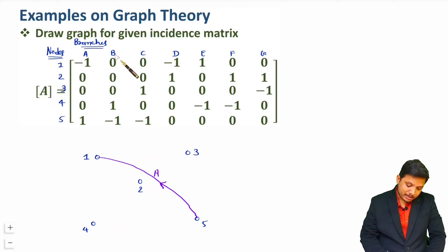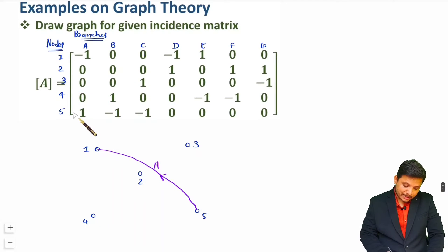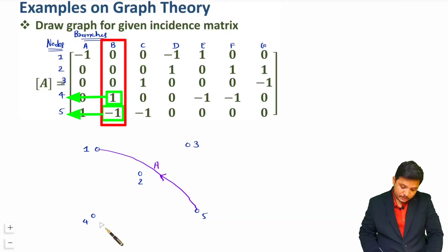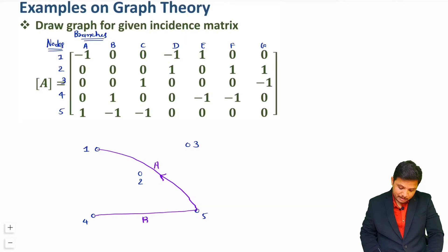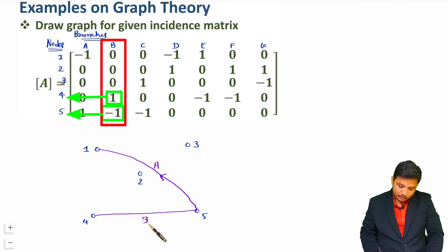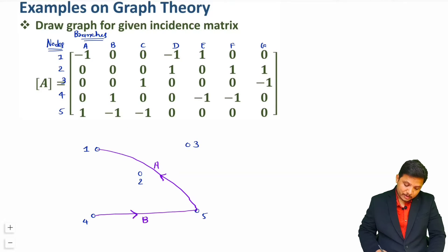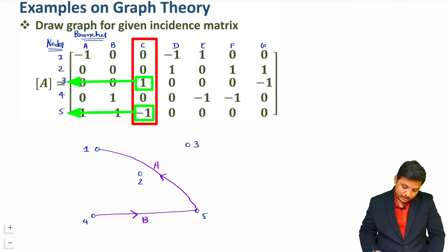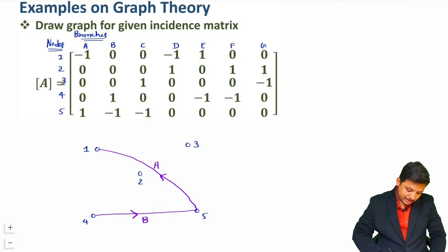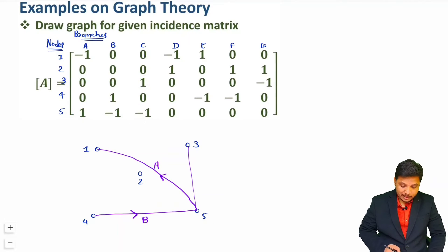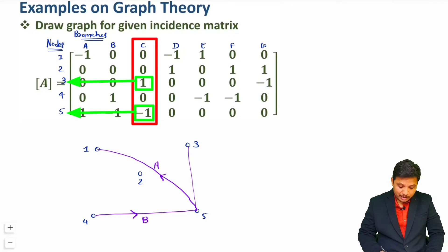Branch B is there in between nodes 4 and 5. So 4 and 5 are connected with branch B, and the direction is from plus to minus, meaning from 4 to 5. Now branch C is there in between nodes 3 and 5. Node 3 is having plus 1 and node 5 is having minus 1, so the direction is from 3 to 5.